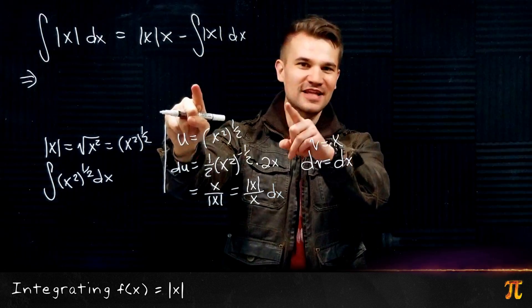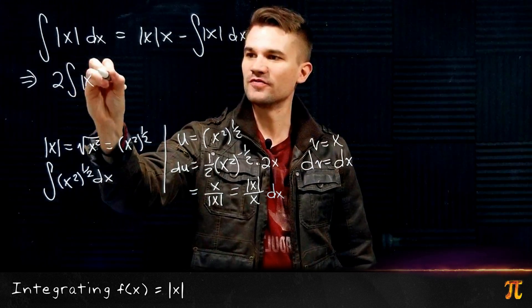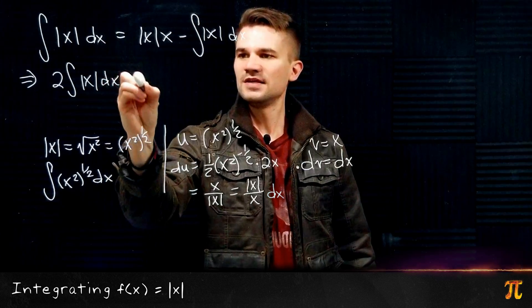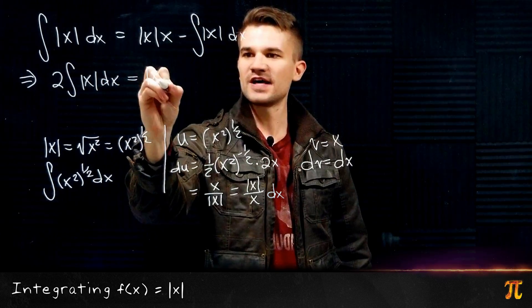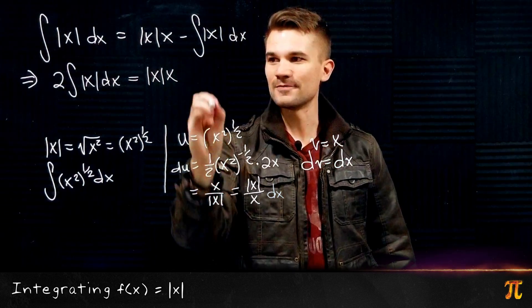So we get 2 times the integral of |x| dx equals |x| times x. And so in conclusion we can say that